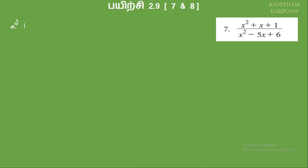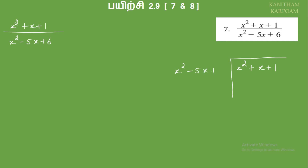So, x squared plus x plus 1 by x squared minus 5x plus 6. So x squared plus x plus 1 divided by x squared minus 5x plus 6.